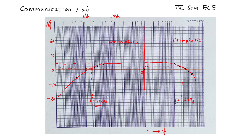On observation, we obtained a cutoff frequency of 1.6 kilohertz for pre-emphasis. Similarly, by locating all the points and drawing a smooth curve and taking minus 3 dB from the maximum, we found the cutoff frequency for de-emphasis to be approximately 1.8 kilohertz. This completes the pre-emphasis and de-emphasis frequency response plotting experiment.